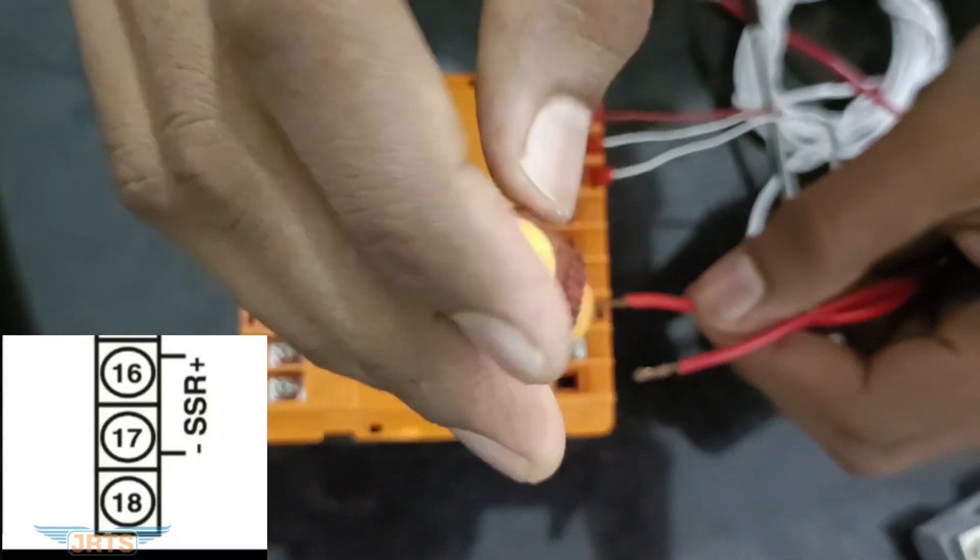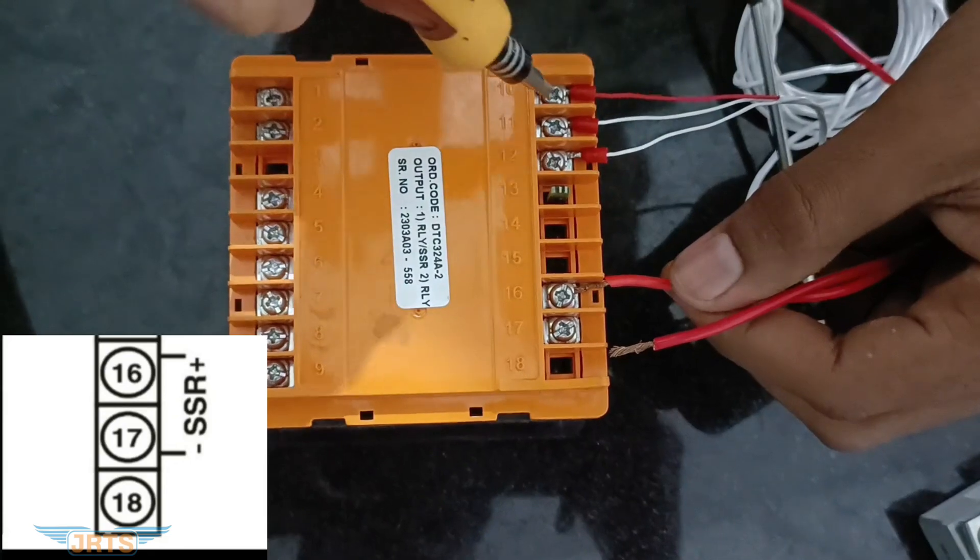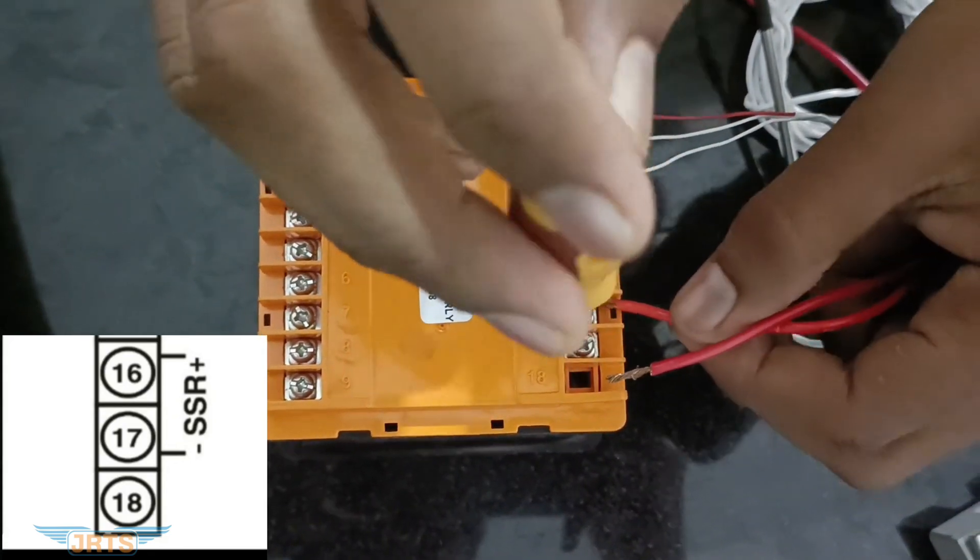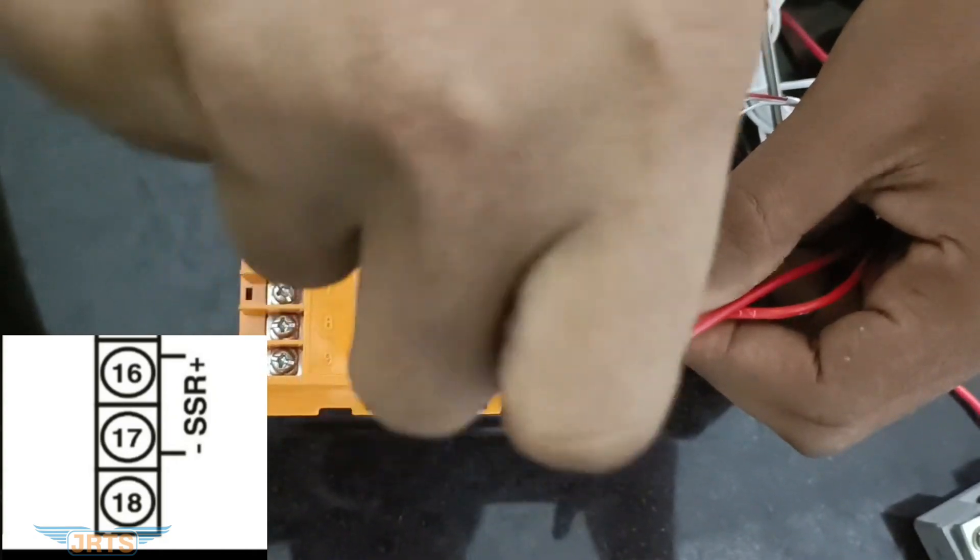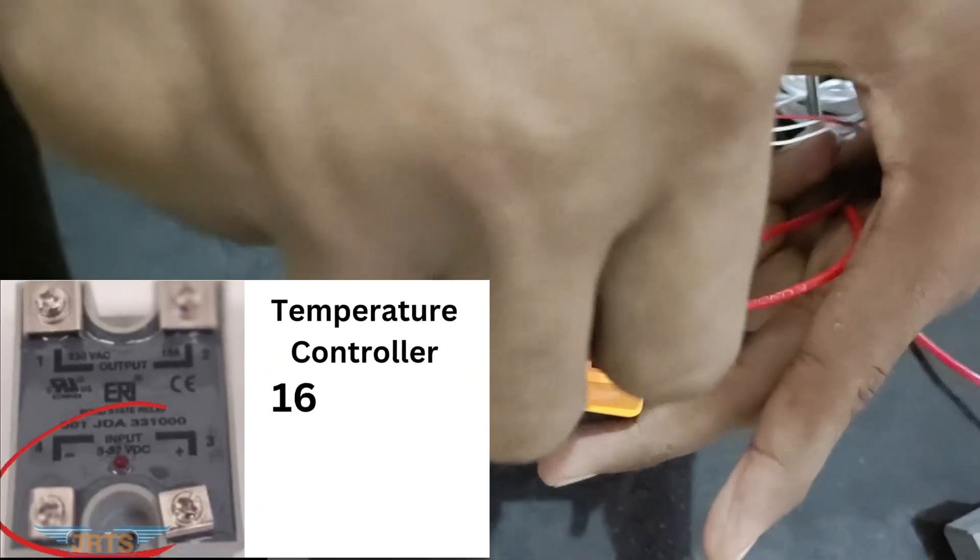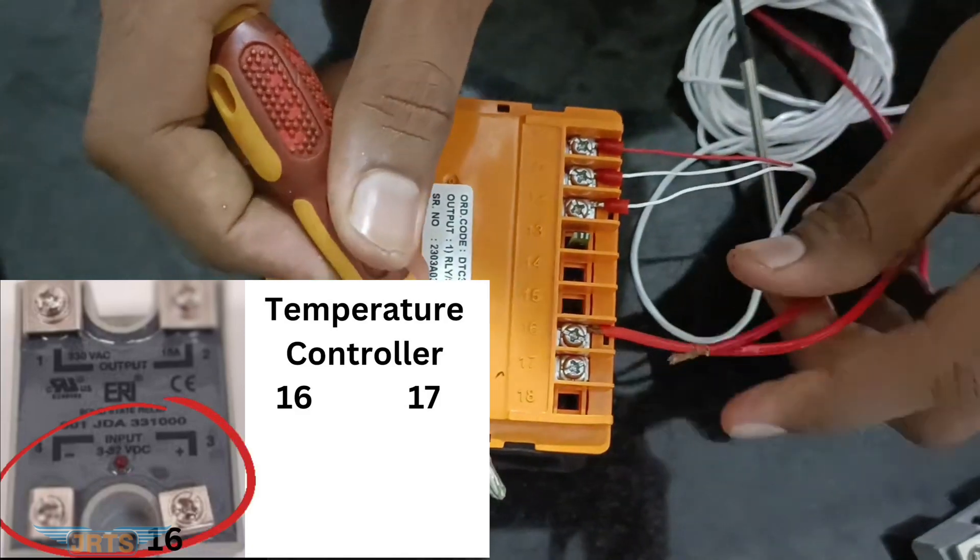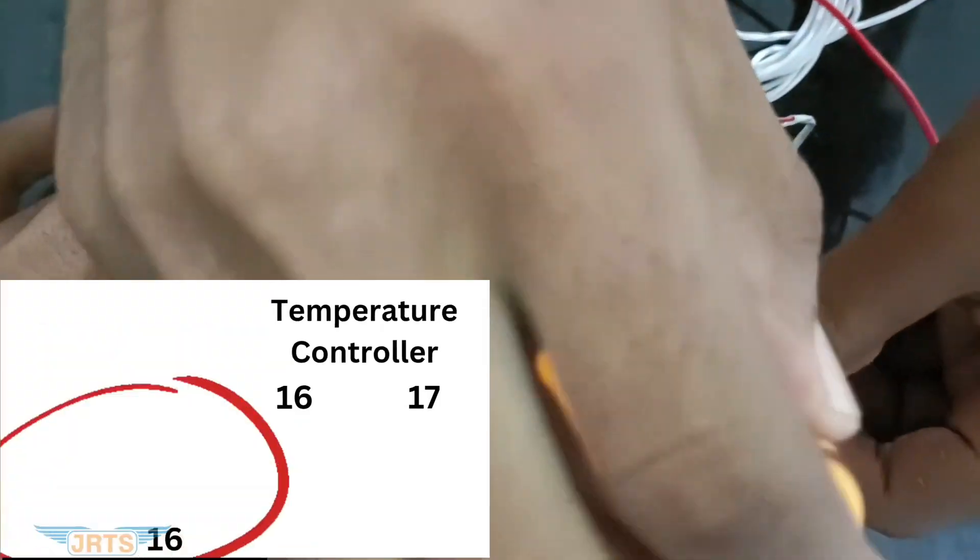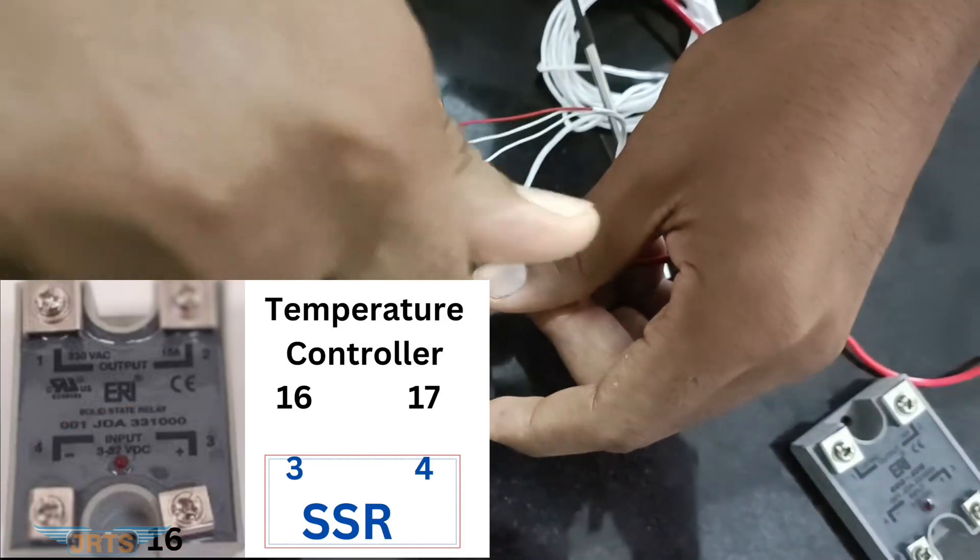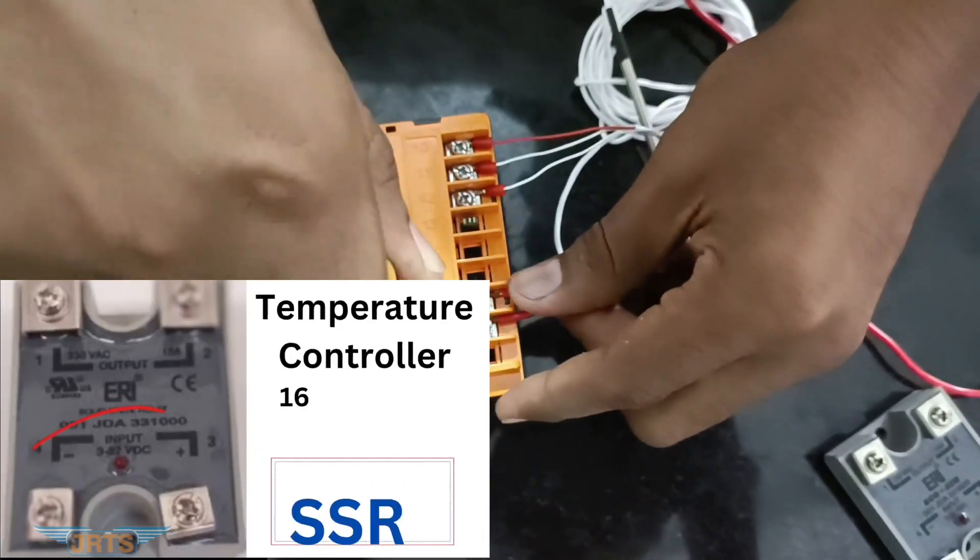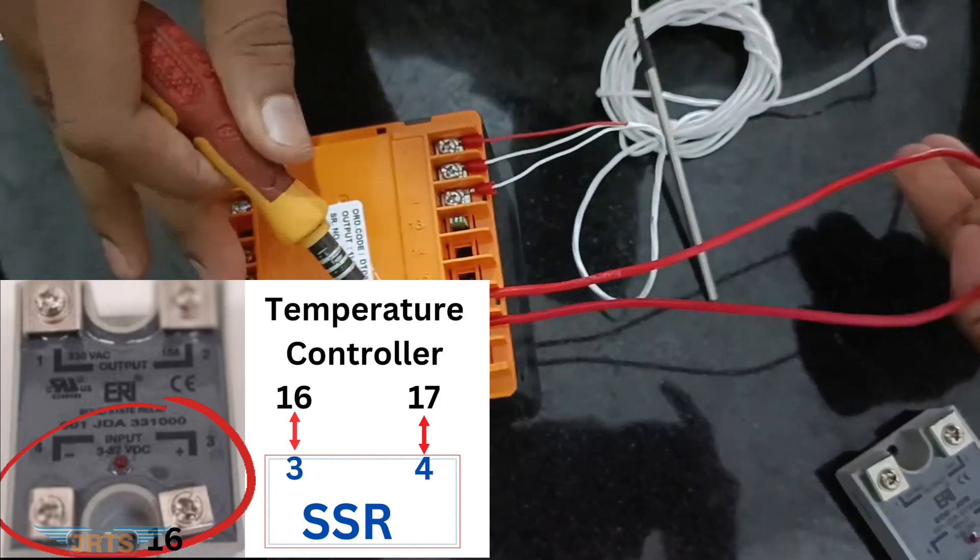Now we can connect SSR to the temperature controller. From temperature controller pin number 16 and 17 for SSR output. From temperature controller pin number 16 and 17 to SSR input 3 and 4 we need to connect.